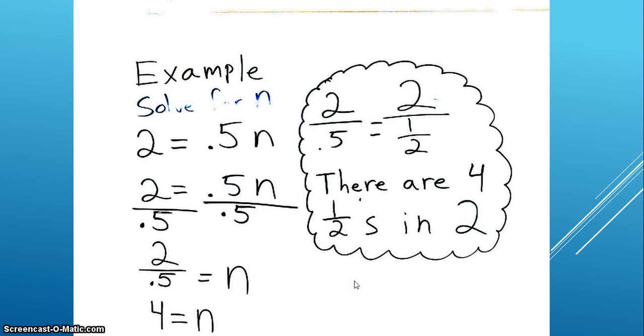For our last example, we have 2 equals 0.5 N. We divide by 0.5 on both sides, and we get 2 over 0.5 equaling N. Our little bubble over here explains that